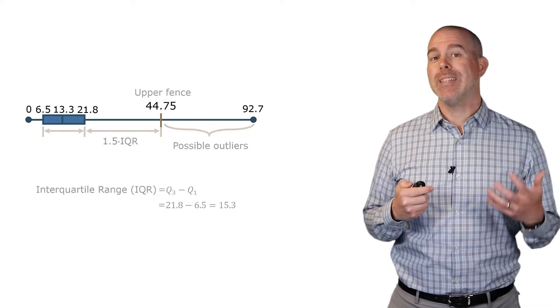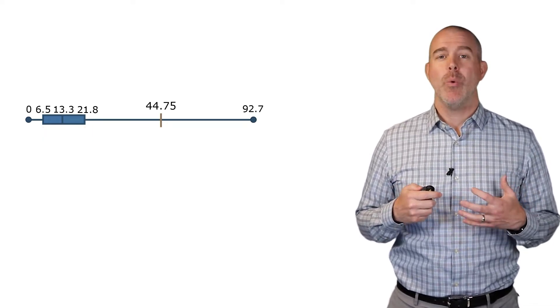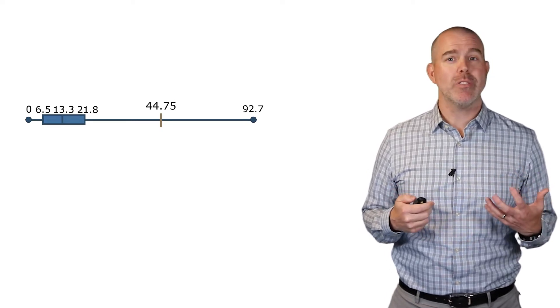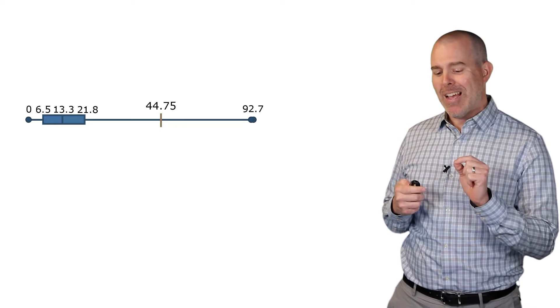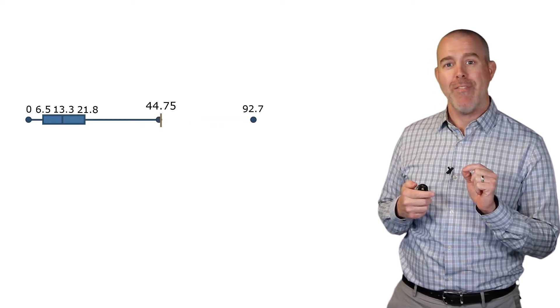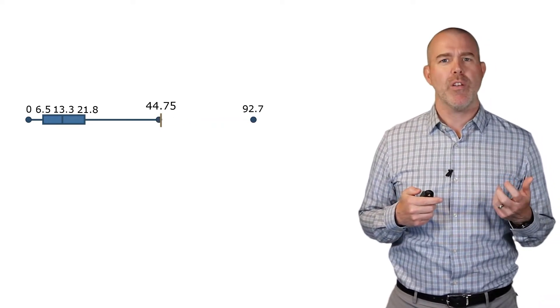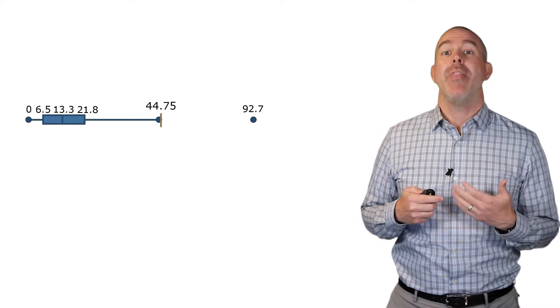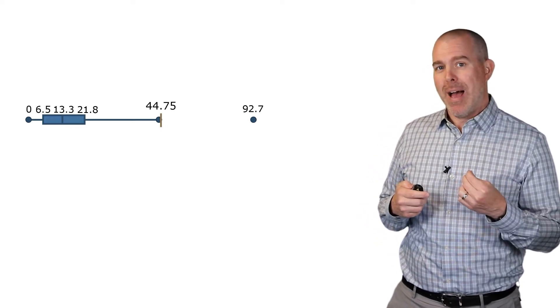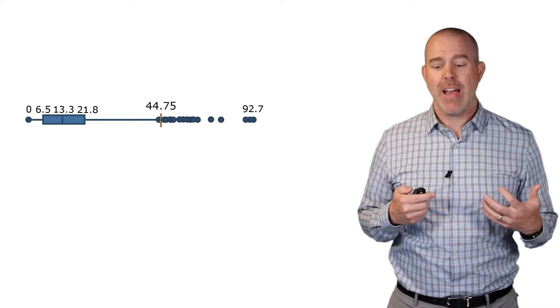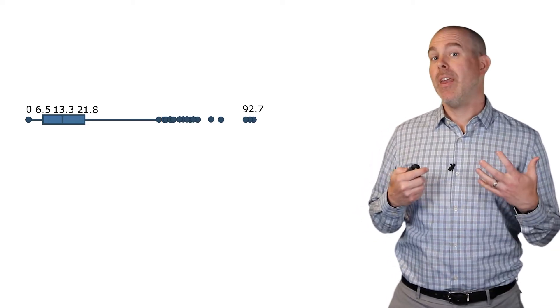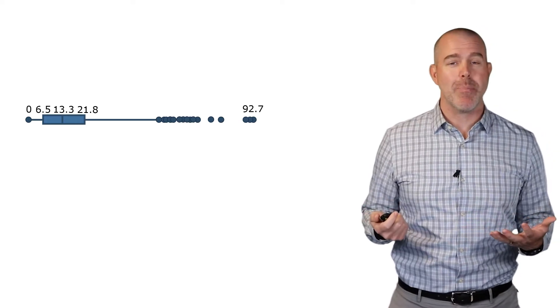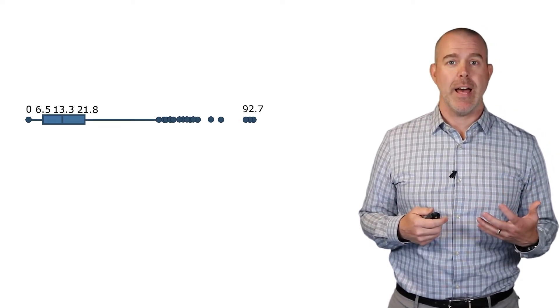In addition to identifying possible outliers, we can also do a modified box plot that shows the possible outliers on the plot. What we do is we go to the next lowest point below that fence. In our case, I believe it was 44.5. And that now becomes the end of the box plot. And then everything above that just becomes dots. All these schools above that just become dots. And this now becomes our standard box plot that shows outliers.